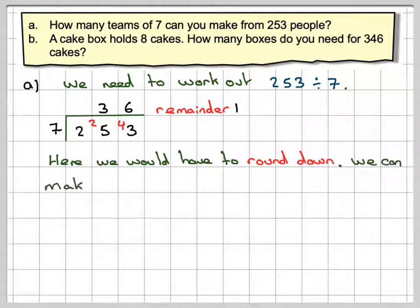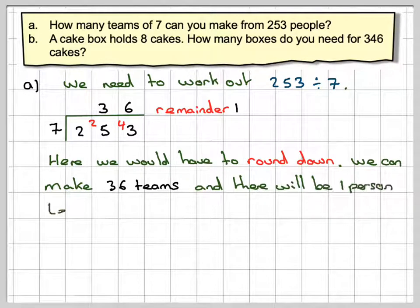So here we round down so we'll make 36 teams and there will be one person left over. Maybe he could be a substitute for one of the teams but that's the maximum number of teams we could make. So in this situation we would round down.